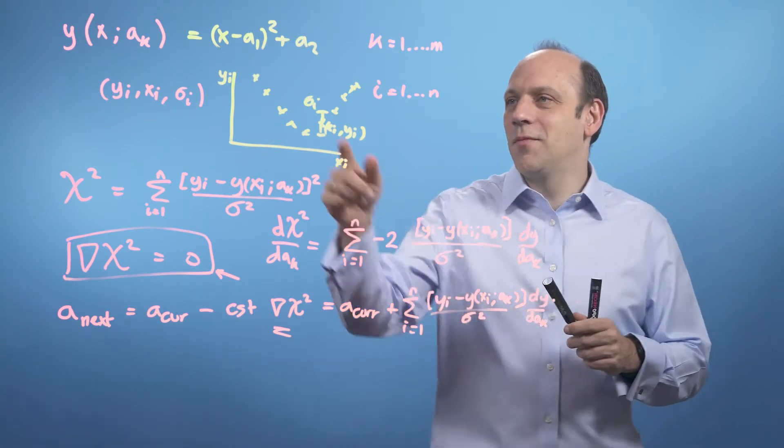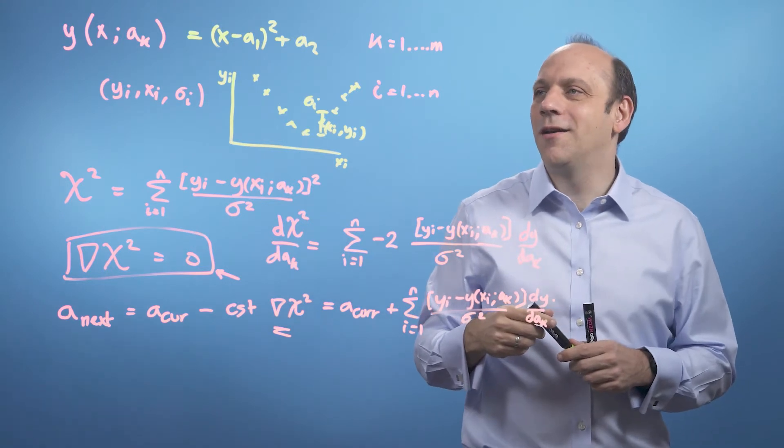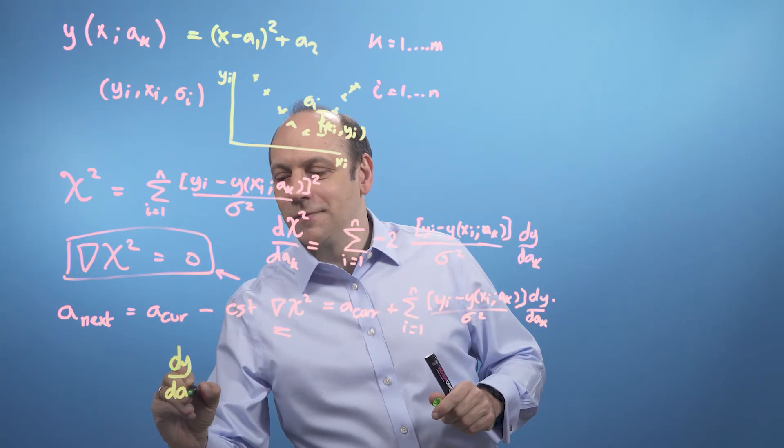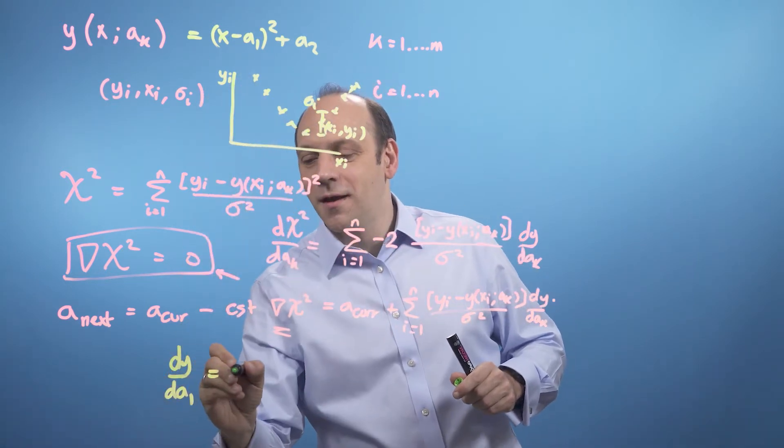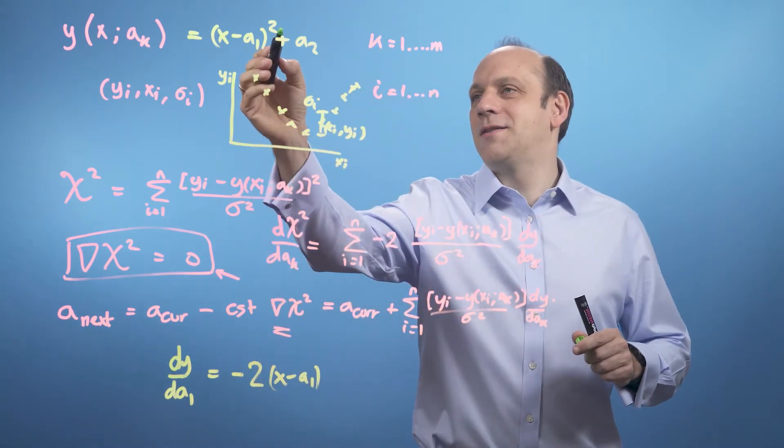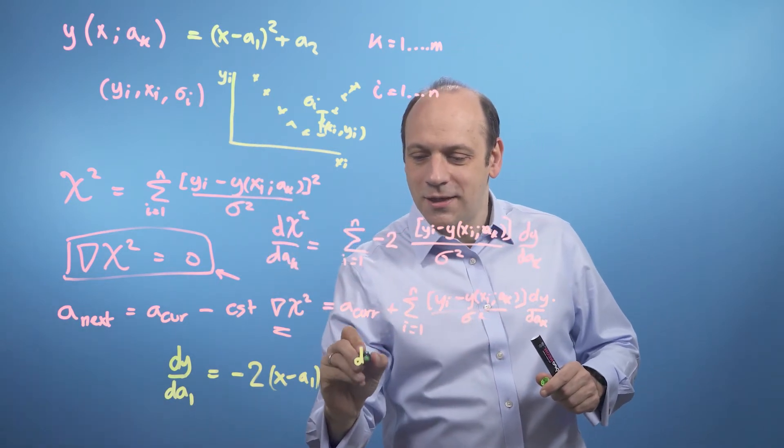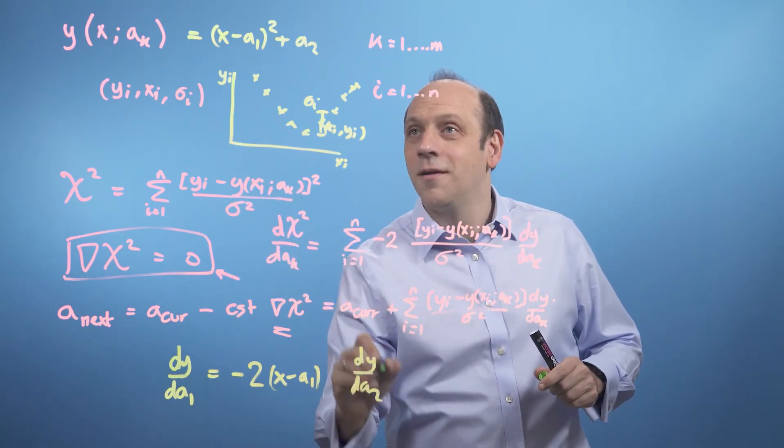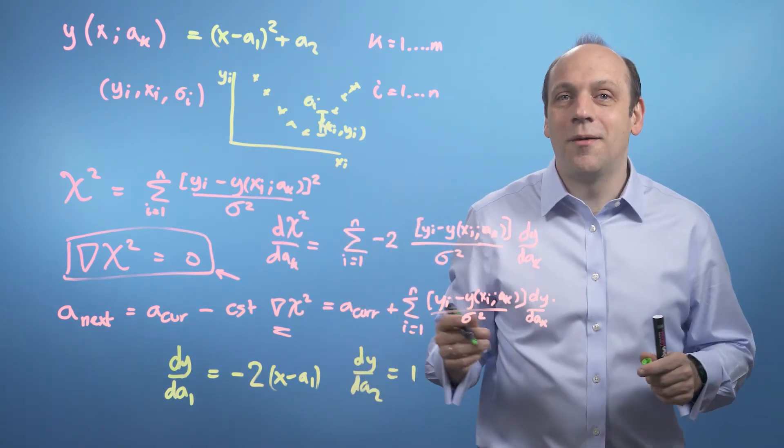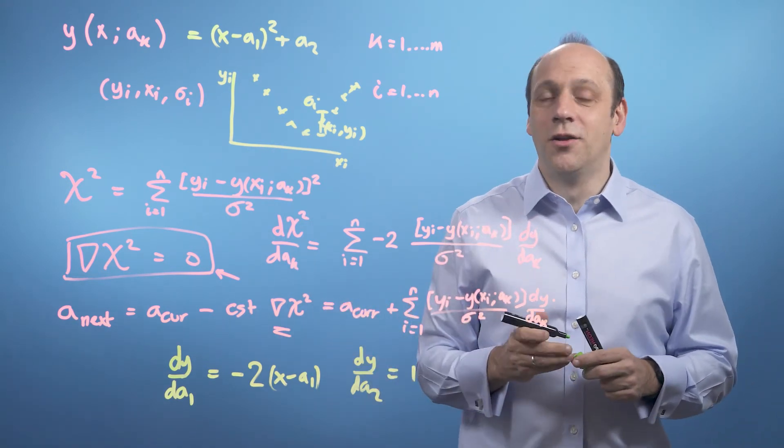For our example here, let me take this example. If we differentiate that with respect to a1, then we'll get that dy by a1 is equal to minus two x minus a1. I take the two down and I get a minus sign when I differentiate the stuff in the bracket. And when I do dy by da2, I'm just going to get one. So it's actually really easy when we come to finally use it, but the expression looks intimidating.